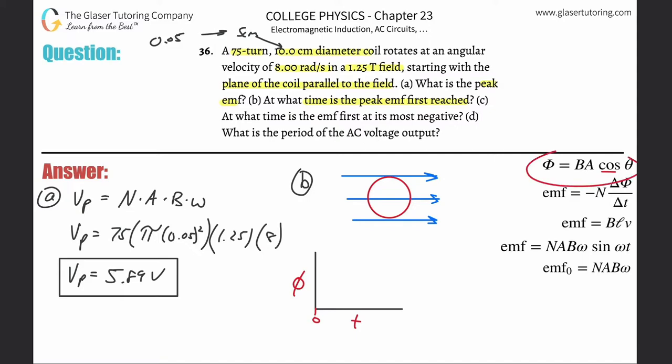At t = 0, the flux is zero — as we just discussed, the 90-degree angle makes it zero. So I plot a point at the origin. Now let's figure out when the flux reaches its maximum.